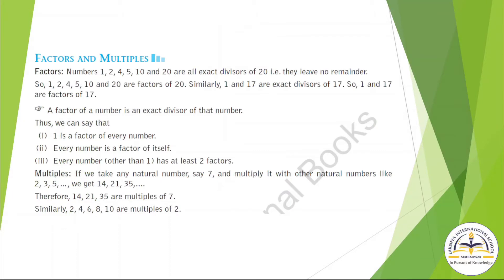Our first concept is Factors and Multiples. What are factors? 1, 2, 4, 5, 10 and 20 are all exact divisors of 20. They leave no remainder. It means when we divide from these numbers, we will get no remainder. So these are the factors of 20.